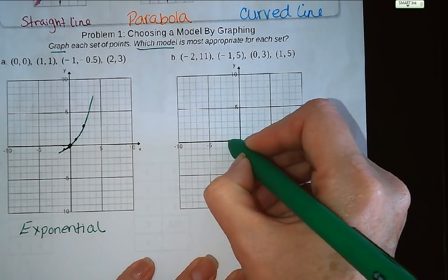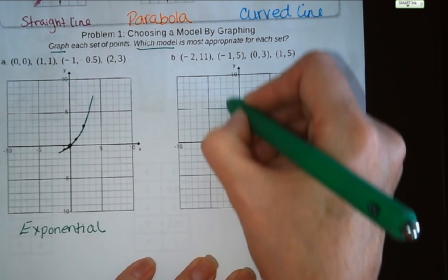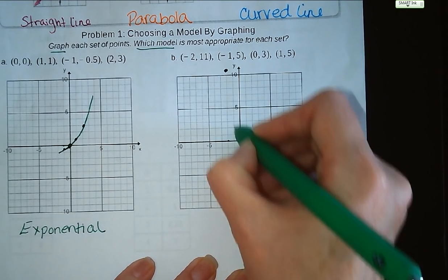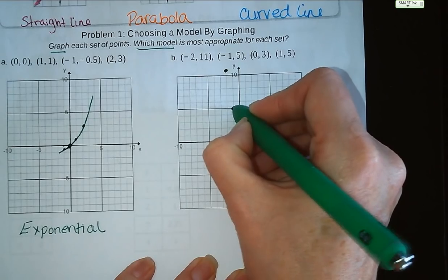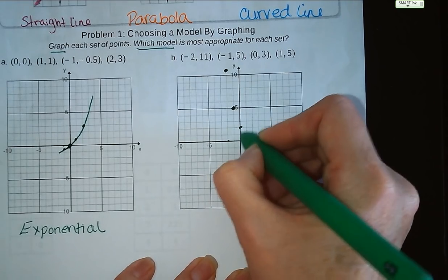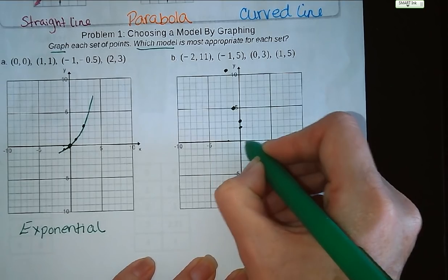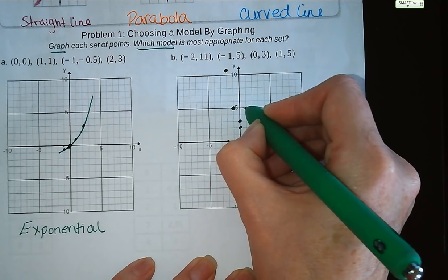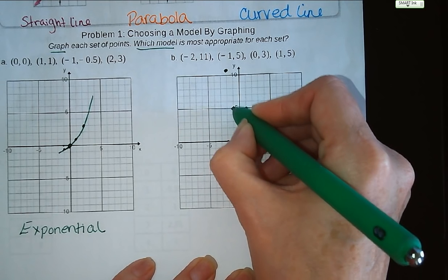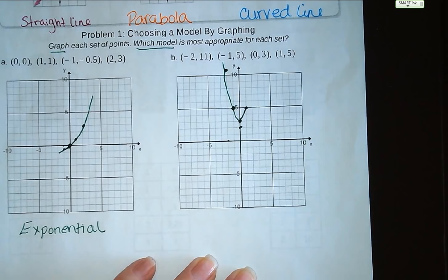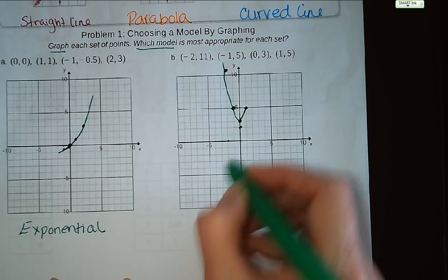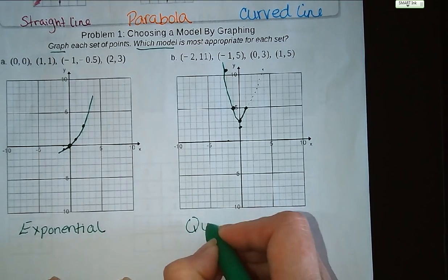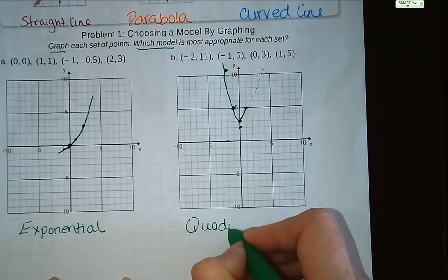Letter B. We have a point at (-2, 11), a point at (-1, 5), a point at (0, 3), and a point at (1, 5). So even though we don't have all of the points shown, we can clearly see this is going to be quadratic, because it clearly has that U shape to it.